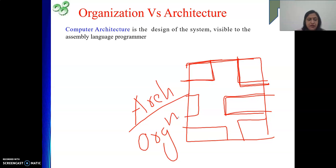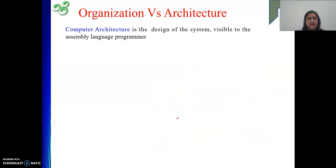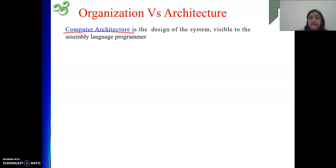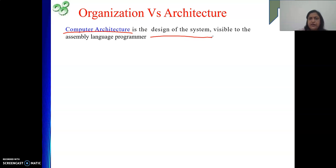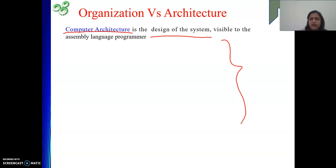Now coming to the technical details — what does organization versus architecture mean in our course? Architecture is the design of the system. When I say design of the system, it means the components which are visible to the assembly language programmer. An assembly language programmer writes assembly language code using various instructions.